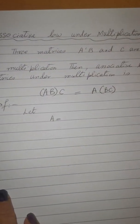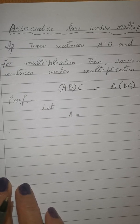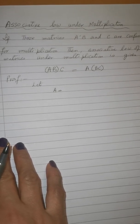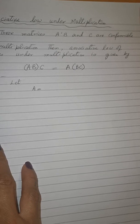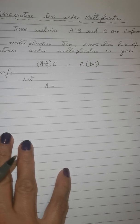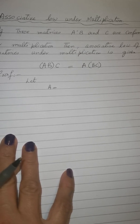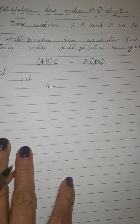Today we will learn about the associative law of matrices under multiplication. If in the exam they ask you to define and prove the associative law of matrices under multiplication, you have to write three lines: if three matrices A, B, and C are conformable for multiplication, then the associative law is given by (AB)C = A(BC).